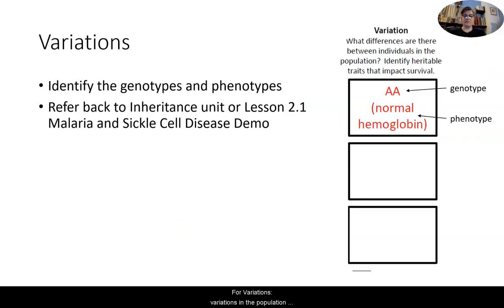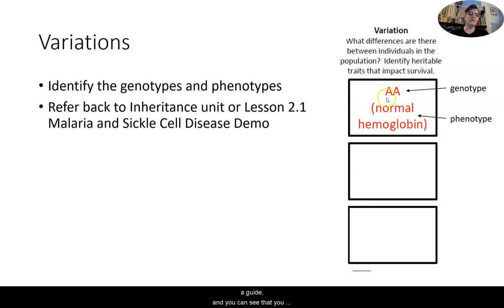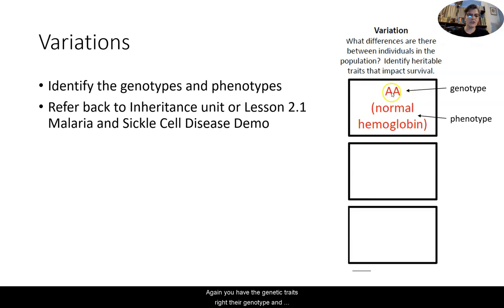For variations, variations in the population are referring to genotypes and phenotypes. Refer back to the inheritance unit or lesson 2.1 to help you fill this out. The top part of the worksheet fills in that first box for you as a guide — you have the homozygous dominant, the AA genotype, which has the phenotype of normal hemoglobin. So you have the genetic traits, which is the genotype, and the observable traits, which is the phenotype. Then you'll fill in the remaining two.